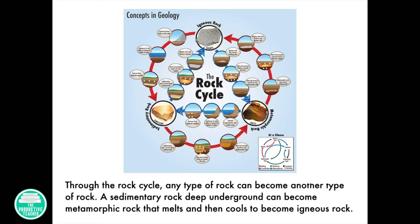Through the rock cycle, any type of rock can become any other type of rock. A sedimentary rock deep underground can become a metamorphic rock, then melts, and then cools to become igneous rock.